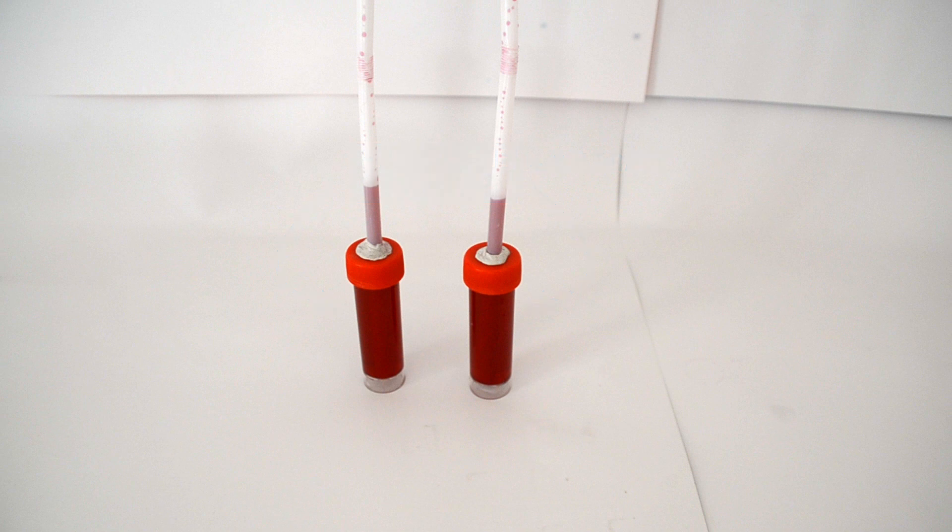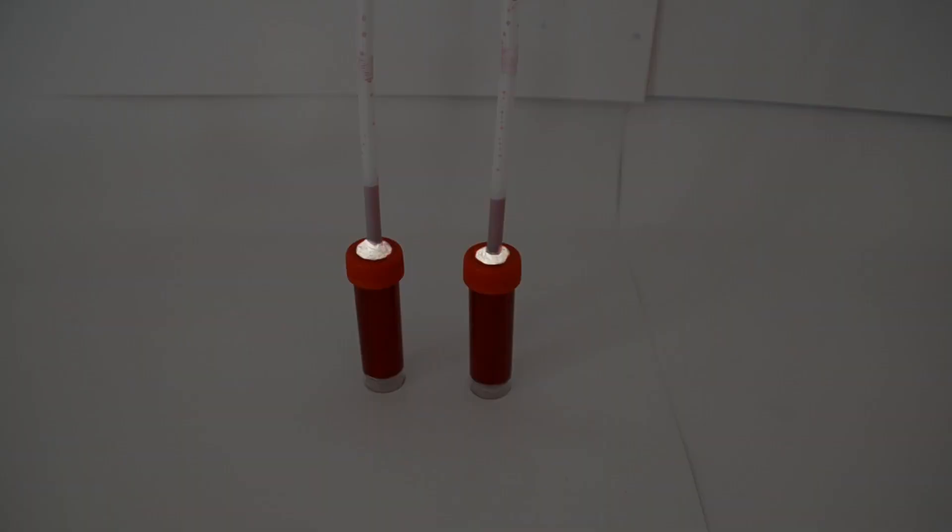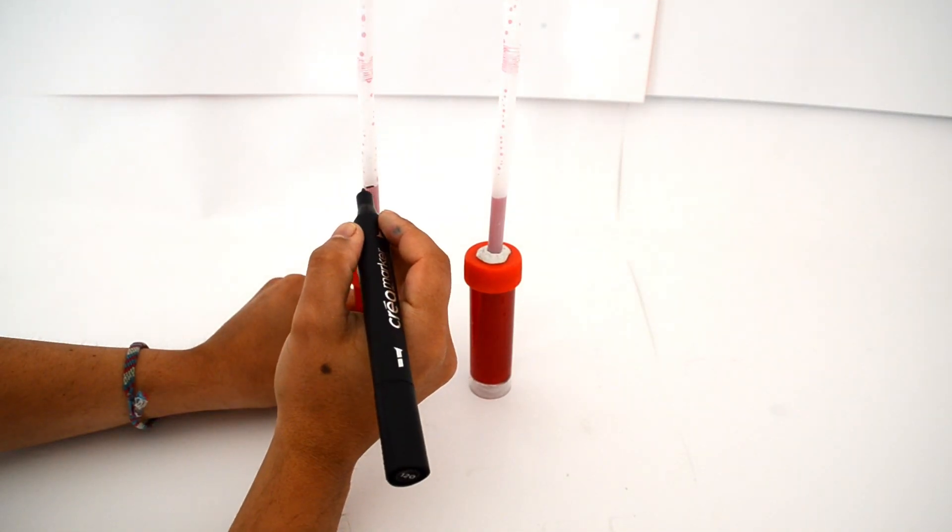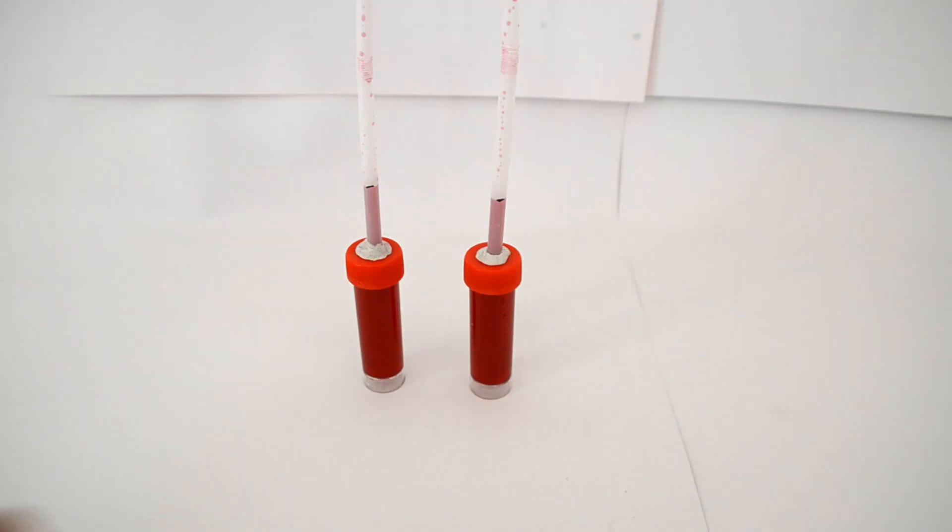We fix the lids on. The lids have been drilled with a hole beforehand so that we can insert a straw in them. The straw will be used as a measuring tool. Finally, we mark the water level on each straw.